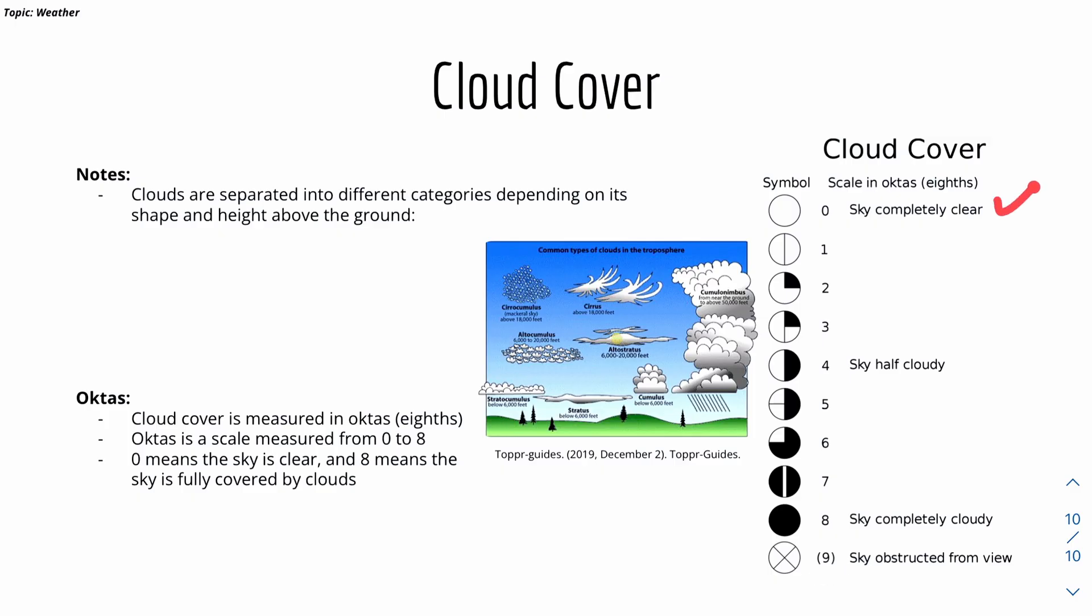Zero means that the sky is completely clear, as shown here. The symbol just shows like a clear circle. Whereas eight means the sky is covered fully by clouds, like so. The sky is completely cloudy.